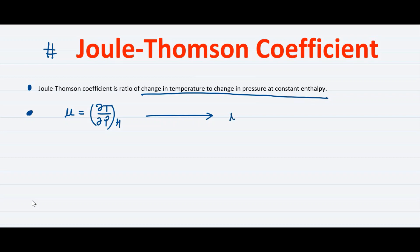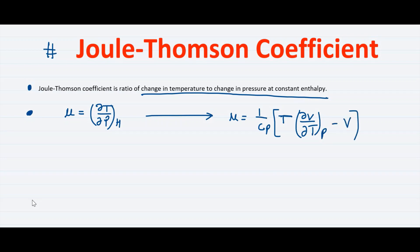By doing some calculation, you can reach the general formula: mu is equal to (1/Cp) into [T times (∂V/∂T) at constant pressure, minus V]. Today's agenda is to derive this general formula.